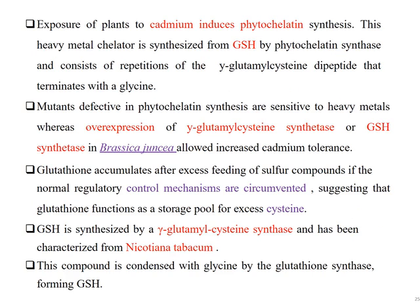Exposure of plants to cadmium induces phytochelatin synthesis. This heavy metal chelator is synthesized from GSH by phytochelatin synthase and consists of repetitions of the gamma-glutamylcysteine dipeptide terminated with glycine. Mutants defective in phytochelatin synthase are sensitive to heavy metals, whereas overexpression of gamma-glutamylcysteine synthetase or GSH synthetase in Brassica juncea allowed increased cadmium tolerance. Glutathione accumulates after excess feeding of sulfur compounds, suggesting that glutathione functions as a storage pool for excess cysteine. GSH is synthesized by glutamylcysteine synthetase and condensed with glycine by glutathione synthetase.